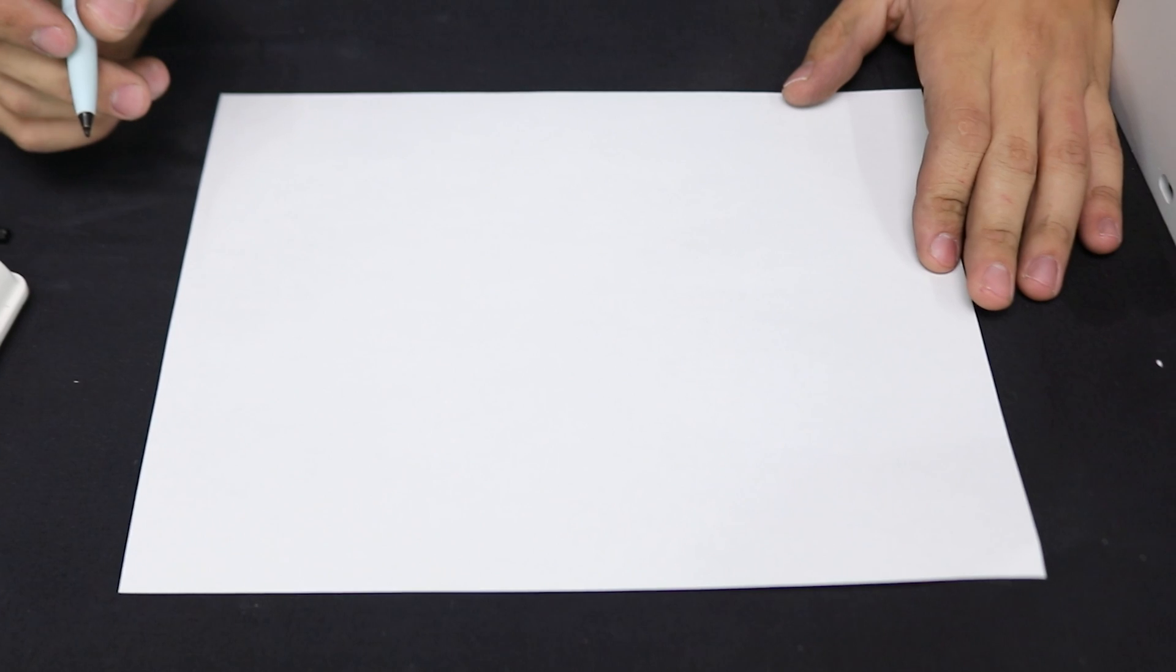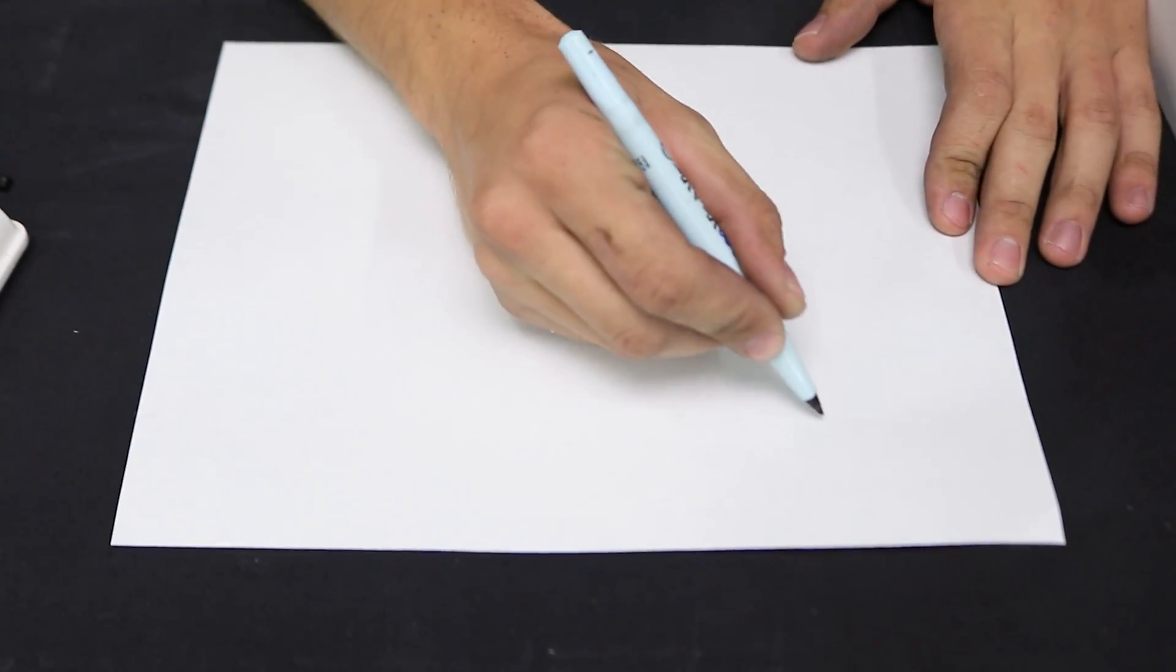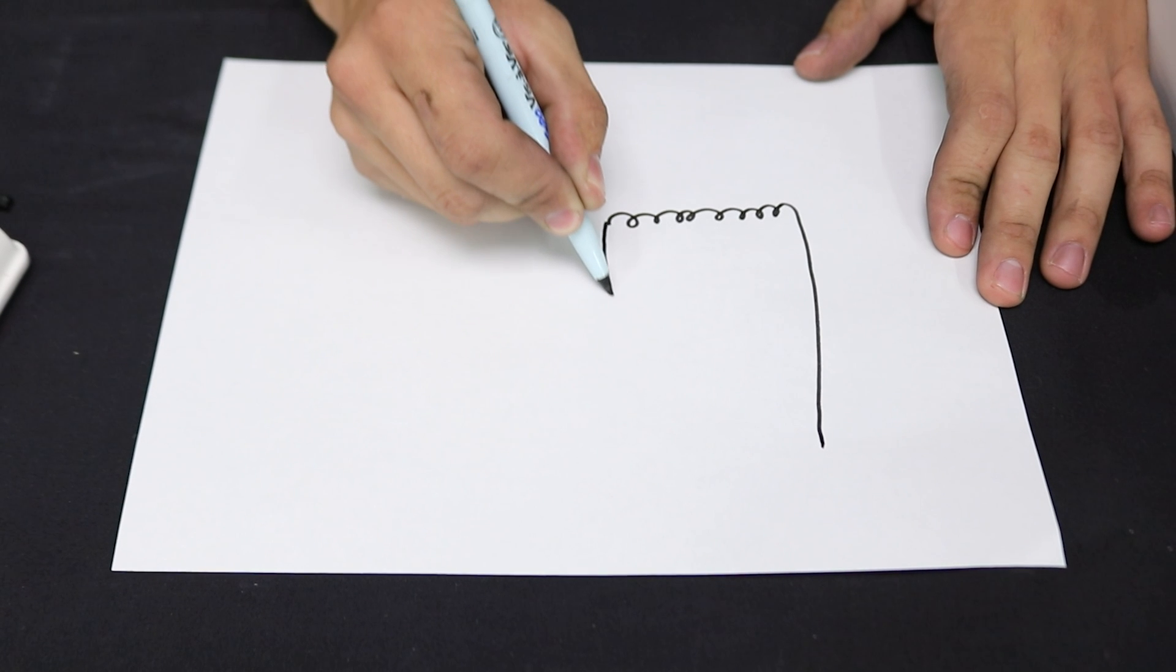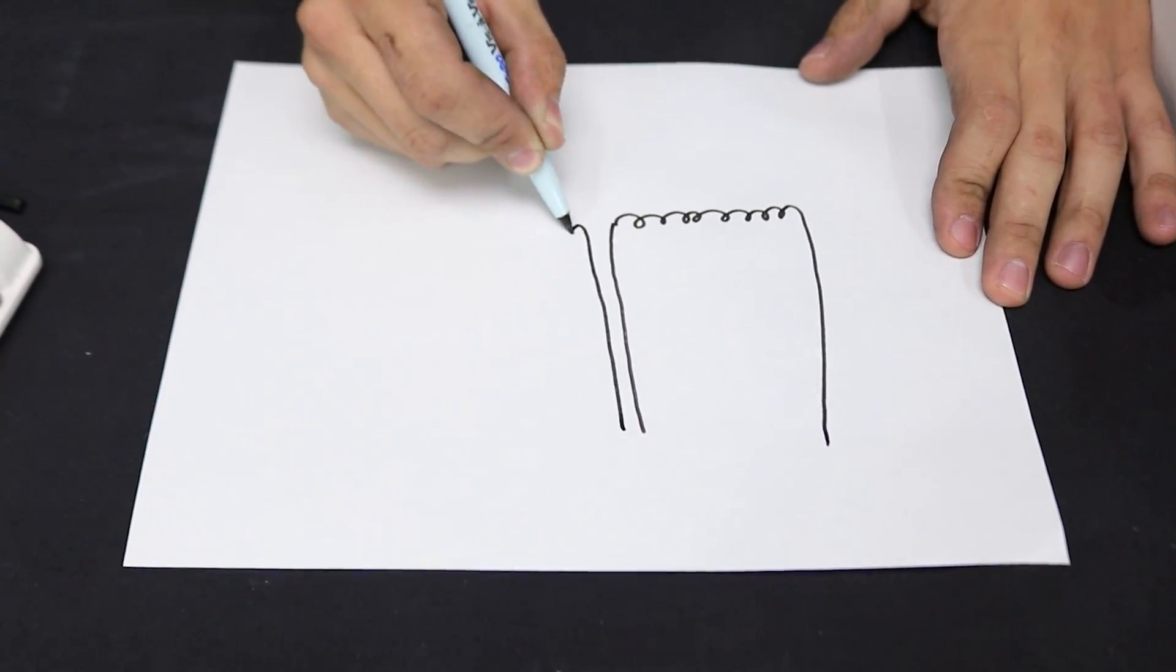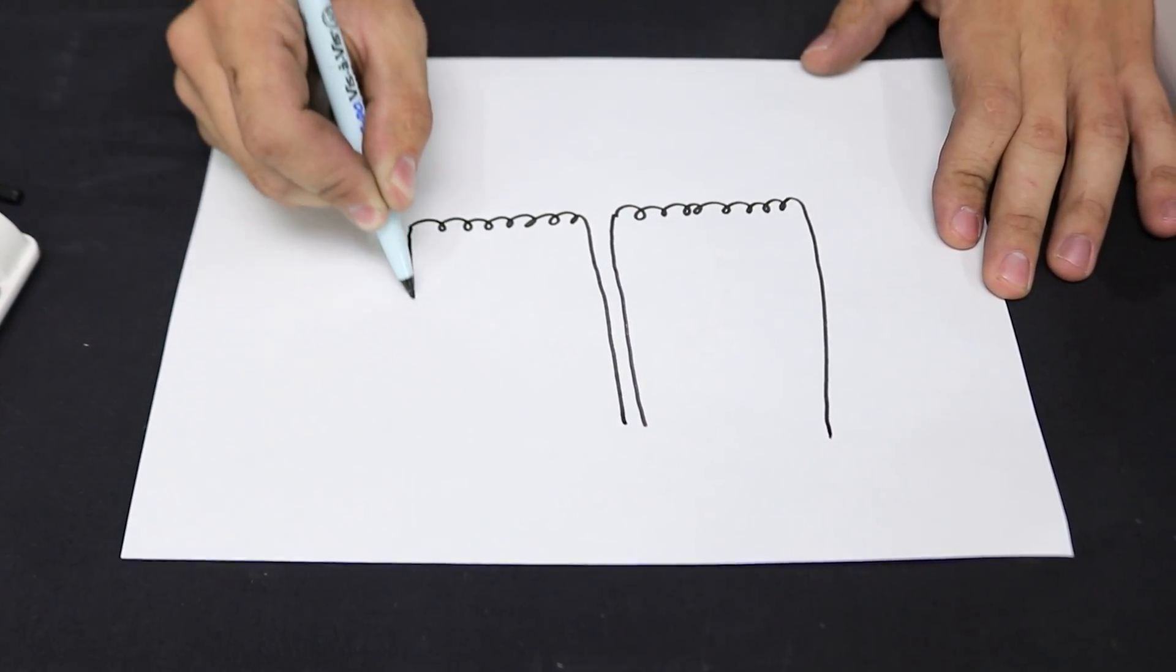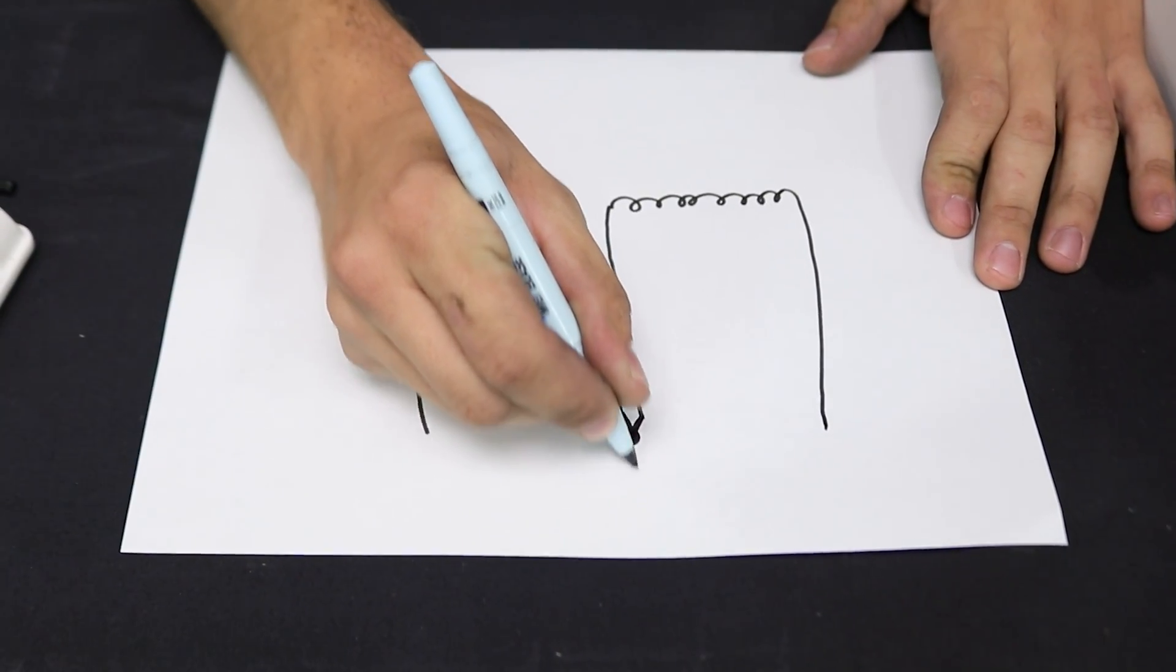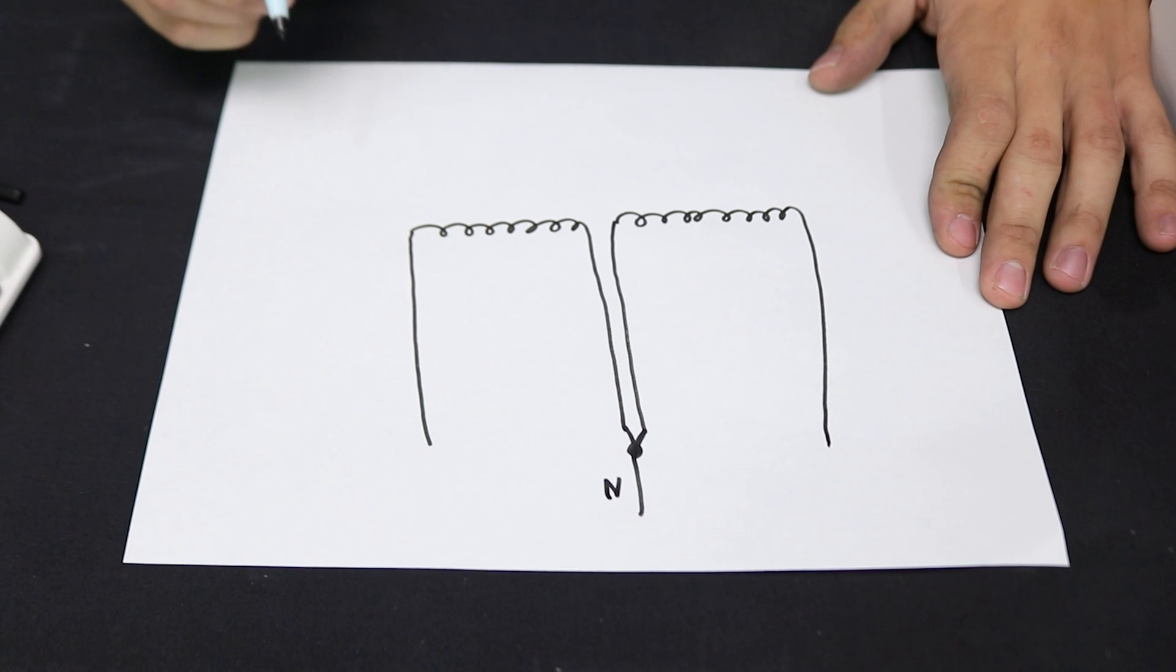So if we imagine this transformer from a diagram point of view, we have multiple coils of windings. This is one winding and this is the other winding. These windings in the case of an auto transformer are tied together in the middle and that is our neutral winding.